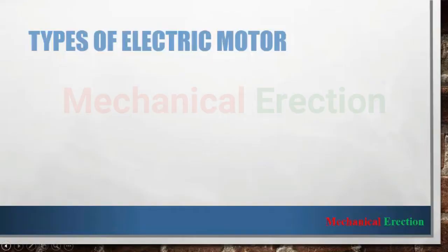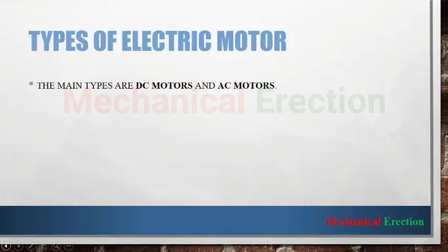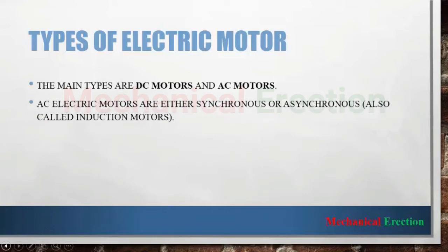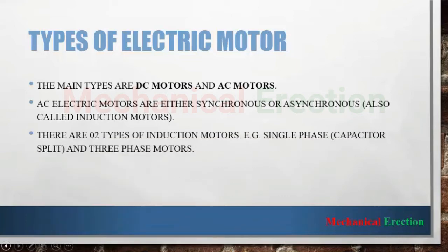Now I will talk about the types of electric motors. The main types are DC motors and AC motors. I will mainly discuss AC motors today. AC motors are mainly synchronous type and asynchronous type, which is also called induction motors. Induction motors are mainly single-phase type, also called capacitor split motor, and three-phase type. These two types are mainly used as induction motors in the practical field.